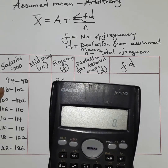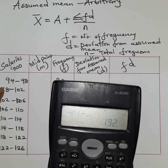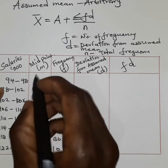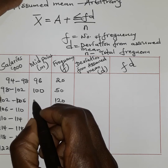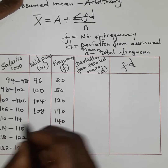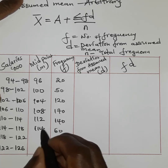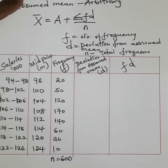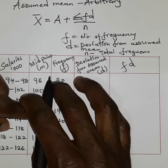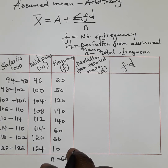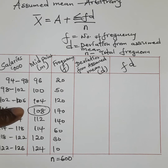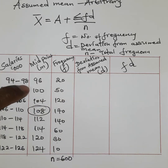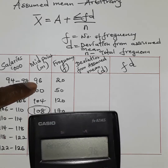To get the midpoint of grouped data, we add the two boundary values and divide by 2. For example, 94 + 98 = 192 ÷ 2 = 96. The midpoints for the groups are: 96, 100, 104, 108, 112, 116, 120, and 124. We approximate the assumed mean to be 108.